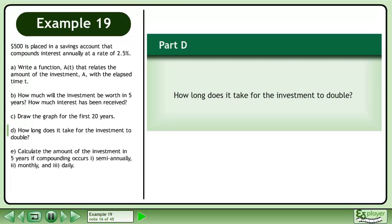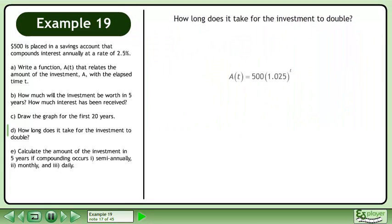Part D. We write the function from Part A, A of t equals 500 times 1.025 raised to the power of t. Plug in $1,000 for the future amount. This is double the initial amount of $500. Divide both sides by 500. This gives us the equation 2 equals 1.025 raised to the power of t.